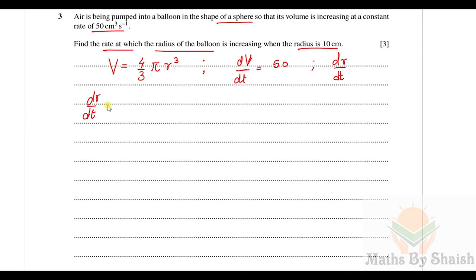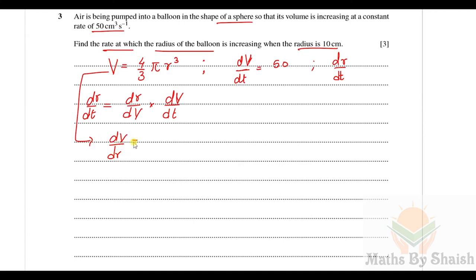Using the chain rule: dr/dt = (dr/dV) × (dV/dt). We need dr/dV, which is the reciprocal of dV/dr. Differentiating V = (4/3)πr³ with respect to r gives dV/dr = 4πr².